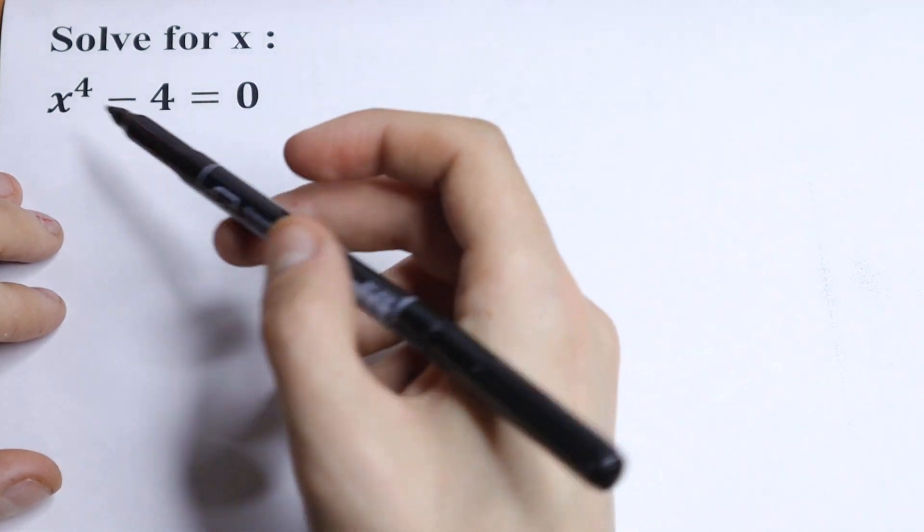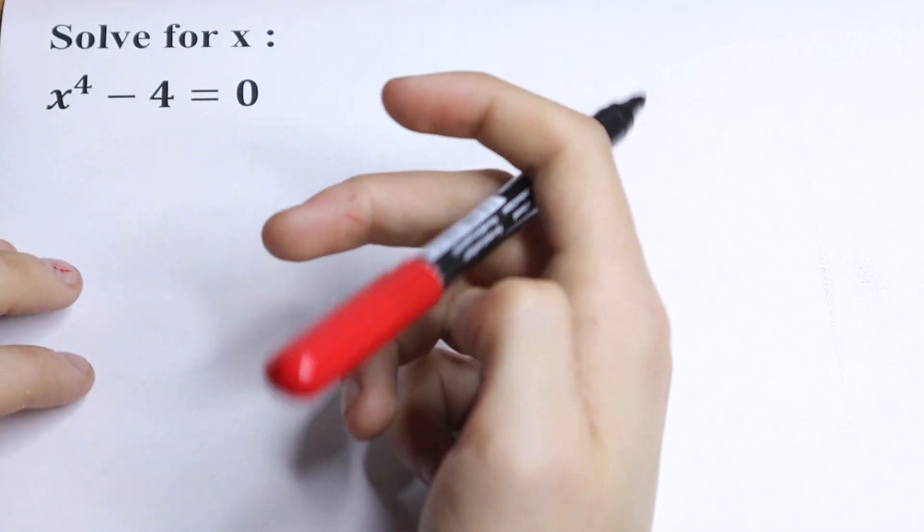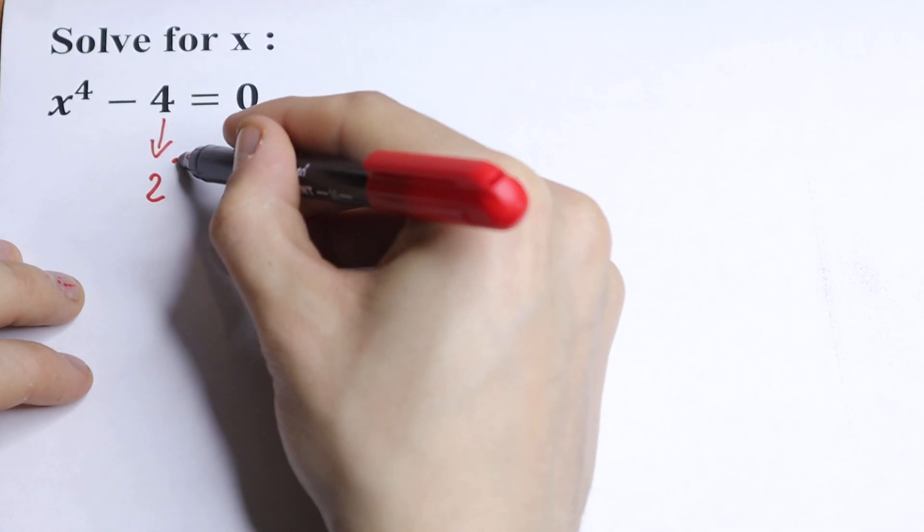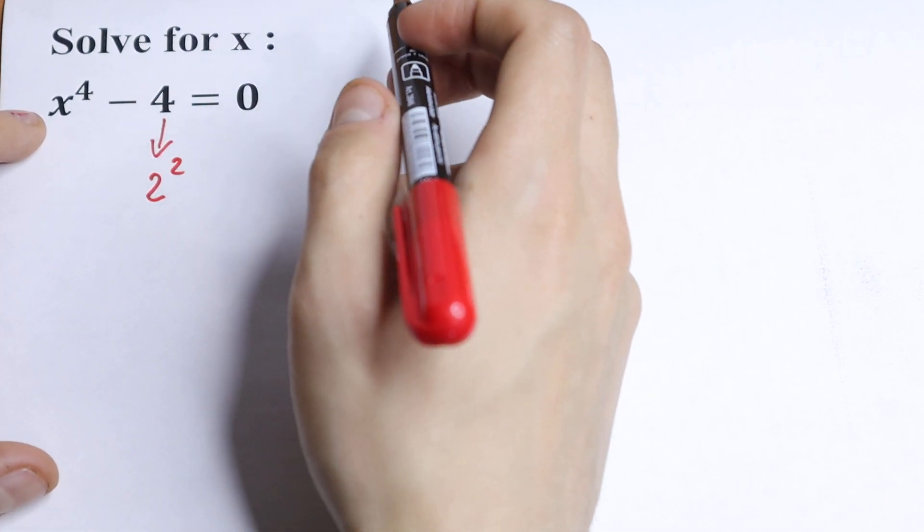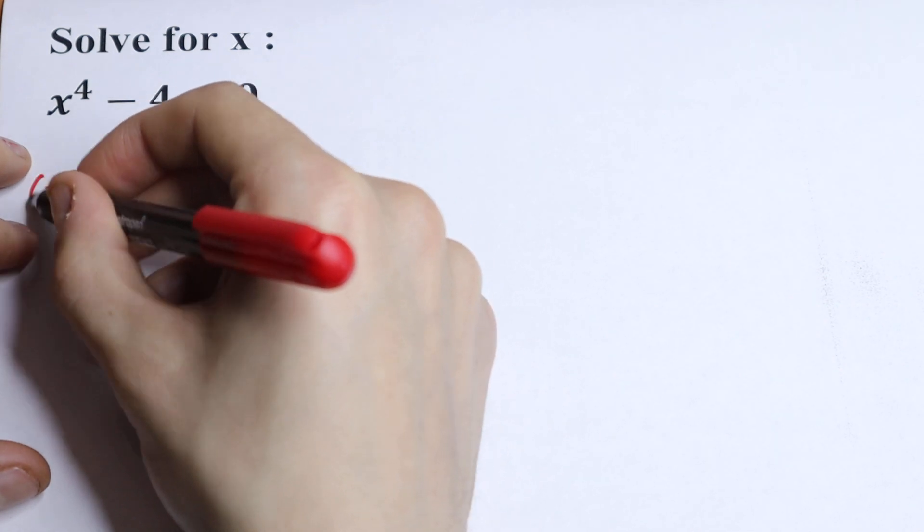How can I do this? We need to simplify this a little bit, we need to factor it. This 4 we can write as 2 square. And this x to the fourth power we can write as x square to the second power.